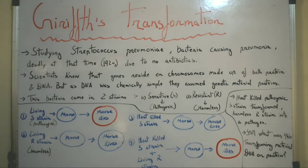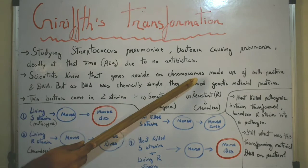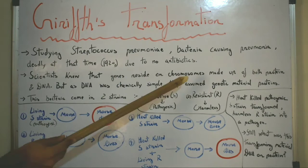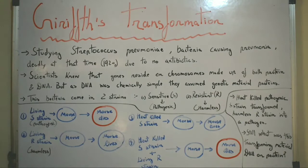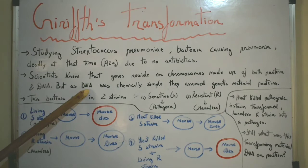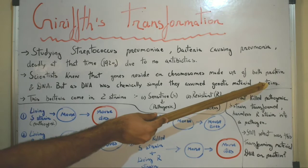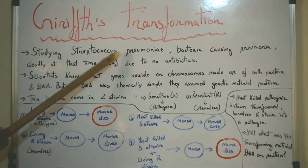In the 1920s, scientists knew that genes reside on the chromosomes, but chromosomes are made up of both protein and DNA. Scientists knew genes were present on chromosomes but were not sure if the genetic material was protein or DNA. Since DNA was chemically simple and constituted only four nucleotides — A, T, G, and C — they thought the genetic material was protein, which was made up of 20 different types of amino acids.